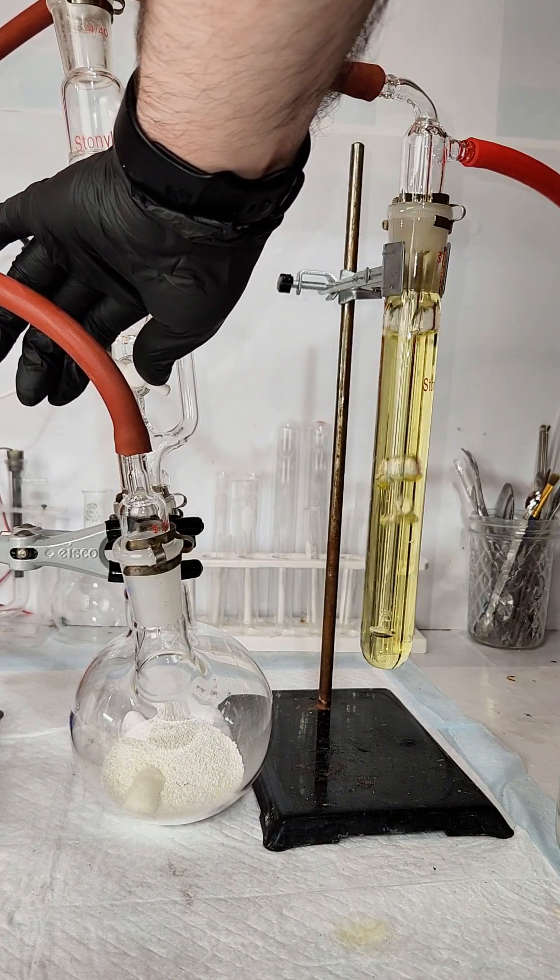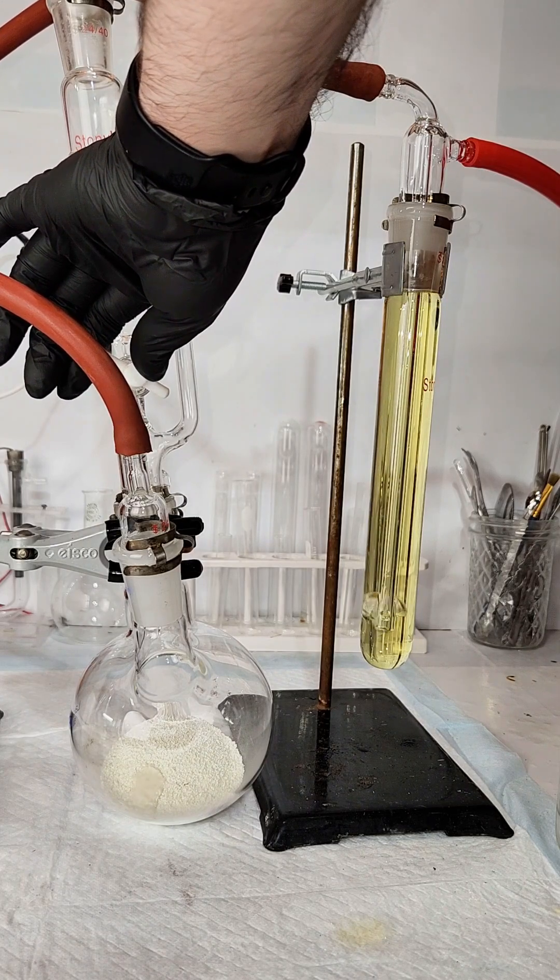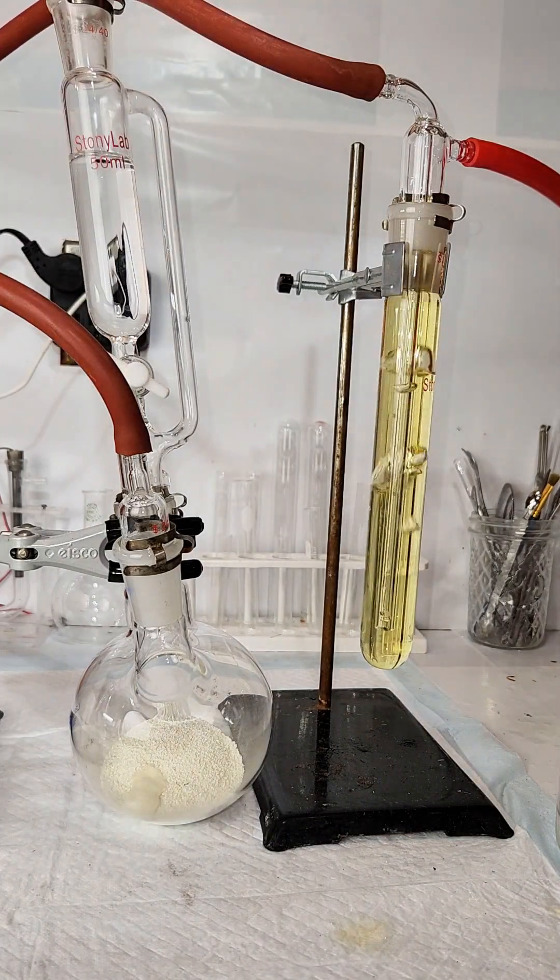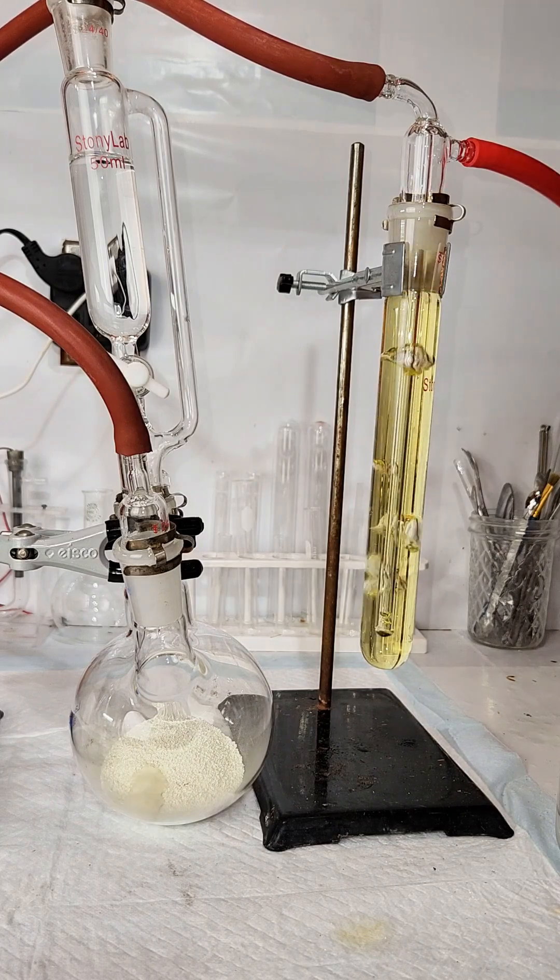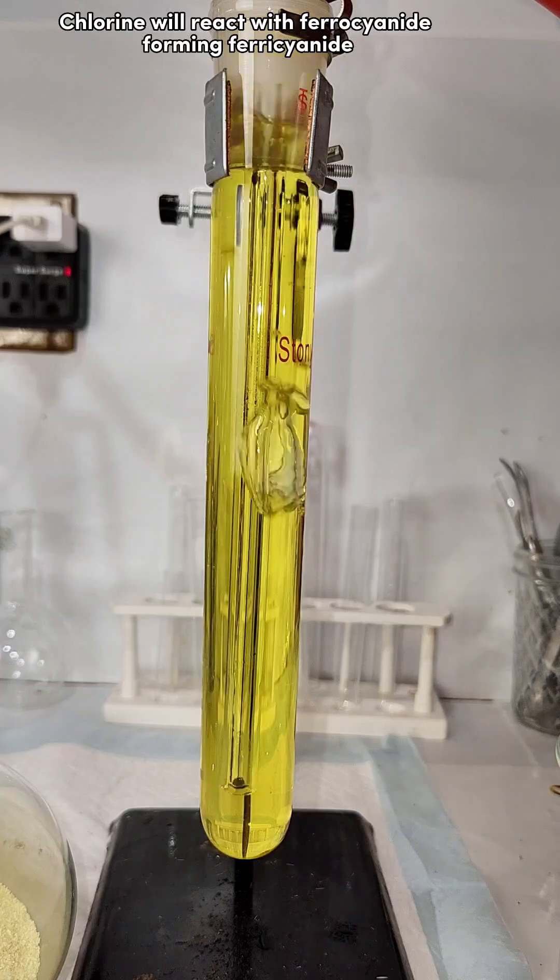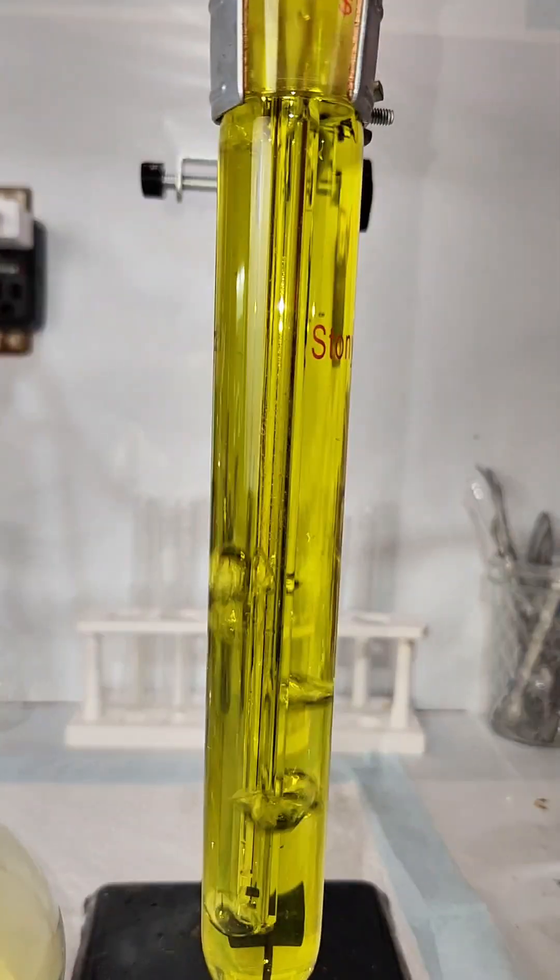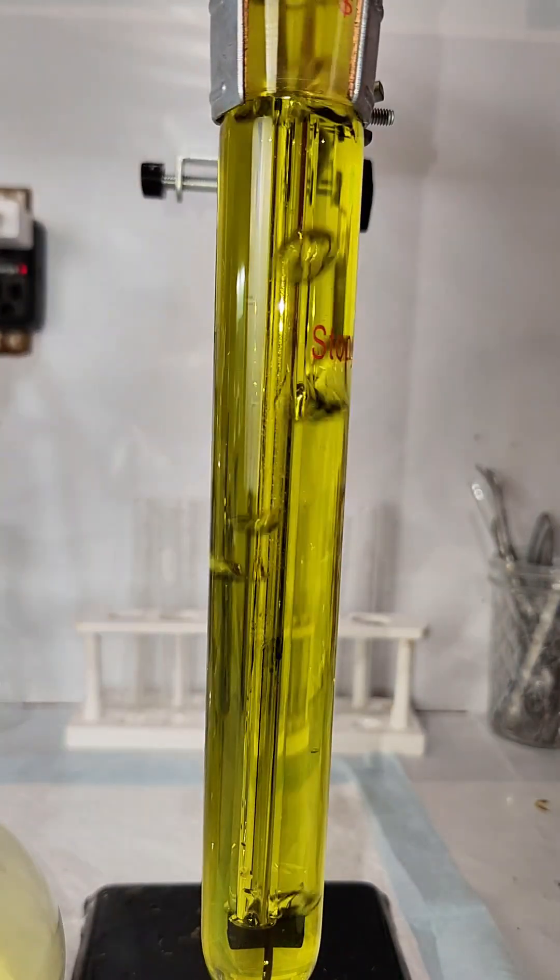The chlorine gas is fed by a tube into my reaction vessel where it's bubbled through the potassium ferrocyanide solution. The chlorine gas will react with the potassium ferrocyanide, oxidizing it to potassium ferricyanide. This will also produce potassium chloride as a byproduct. You can actually see this reaction happen in real time as the solution darkens.